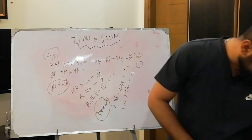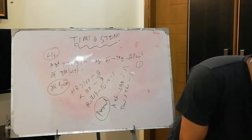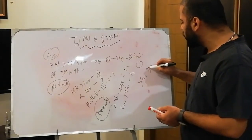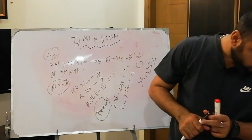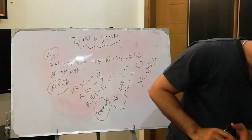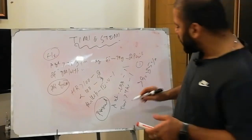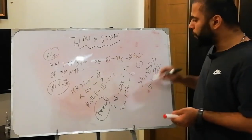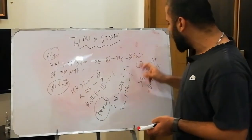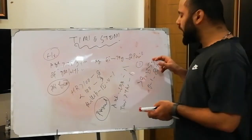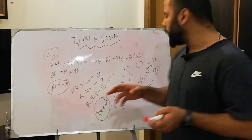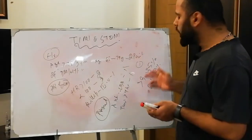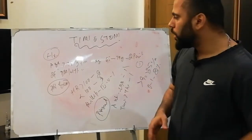So what does the TIMI score tell us? If the score is more than nine, then the mortality is more than 35%. But if the TIMI score is zero to one, then the mortality is almost less than 2%. You need to counsel the patient according to these mortality figures based on their calculated score.